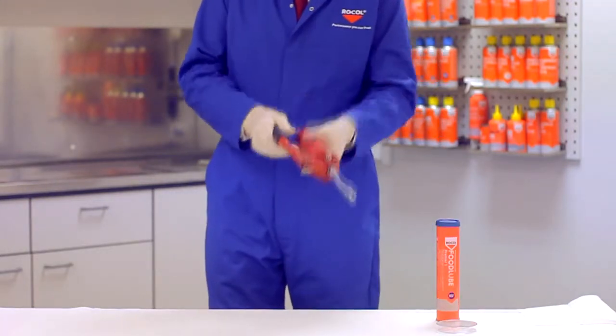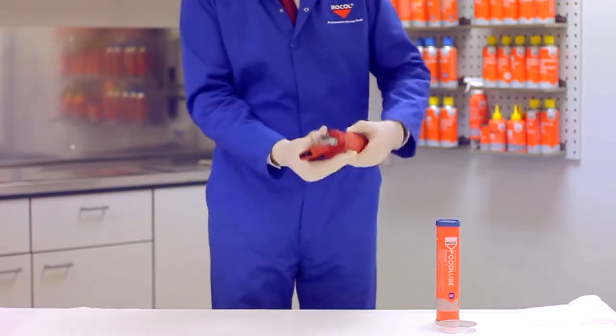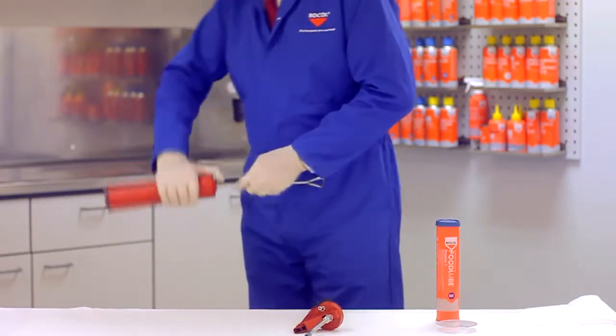Take your standard grease gun and to eject the used cartridge, pull the plunger rod back fully. Unscrew the cartridge barrel. Depress the plunger rod to eject the cartridge into the bin.